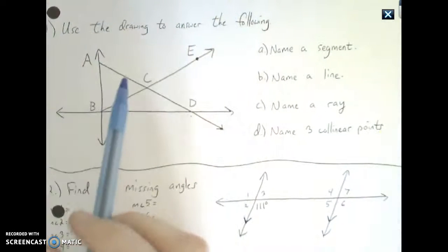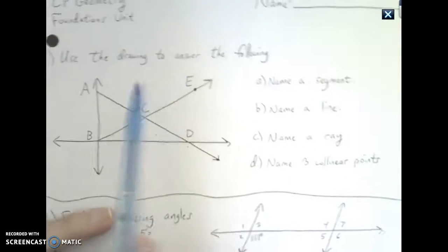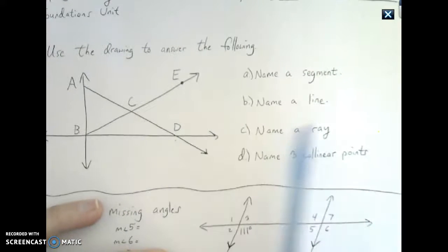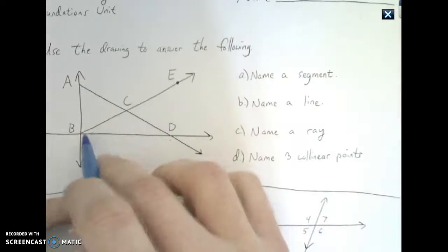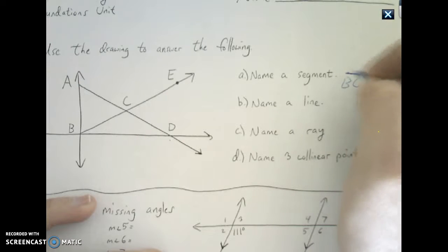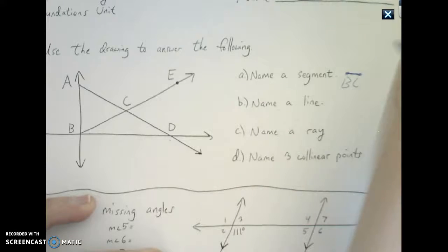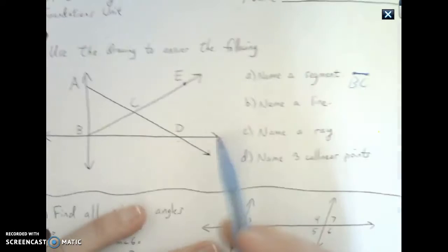Alright ladies and gentlemen, so here we go taking a look at our practice test. Use the drawing to answer the following. Name a segment. A segment is just two points, B and C. And you need to put the correct symbol over top of it. So it's a regular line, no arrows. Now naming a line, please be careful.